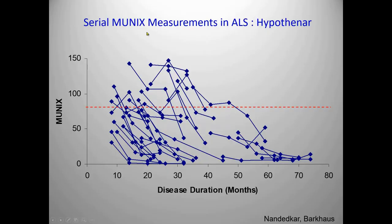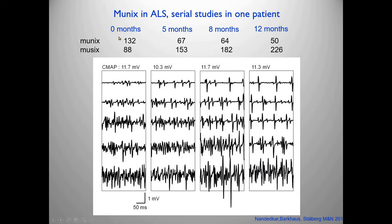Here is a situation where we follow patients over time, with all data from one patient connected by lines. We can see how the number of axons disintegrates over time and follow the effect of possible therapy. Here is background data from a serial study: the same patient at 0, 5, 8 and 12 months. Initially nearly normal, but over time the individual motor unit potentials become larger and fewer. The MUNIX value goes from 132 down to 50, and the motor unit size index (MUSIX) goes up from 88 to 226.